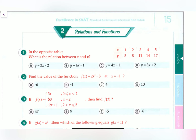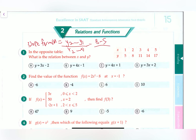Number one says: in the opposite table, what is the relation between x and y? What we simply do is follow the slope formula, which is y2 minus y1 over x2 minus x1. Let's plug it in: 8 minus 5 over 2 minus 1, which is 3 over 1, so m equals 3. So it's y equals mx plus b.